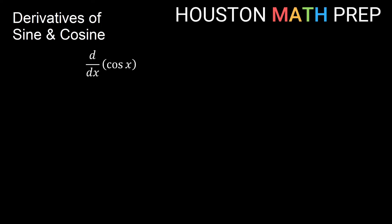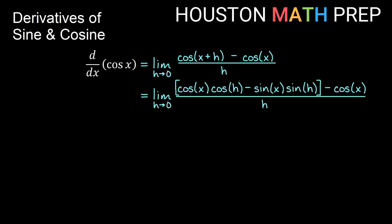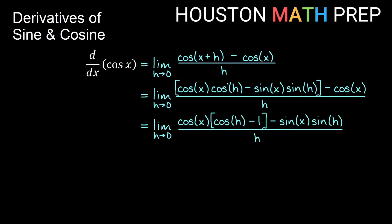We can do a similar thing with the derivative of cosine x, using the limit as h→0 of (cosine(x+h) minus cosine x) over h. Using the sum formula for cosine — cosine(a+b) = cosine a cosine b minus sine a sine b — we expand and collect terms. Cosine x appears in two terms, so we factor it out to get cosine x times (cosine h minus 1), minus sine x sine h, all over h.